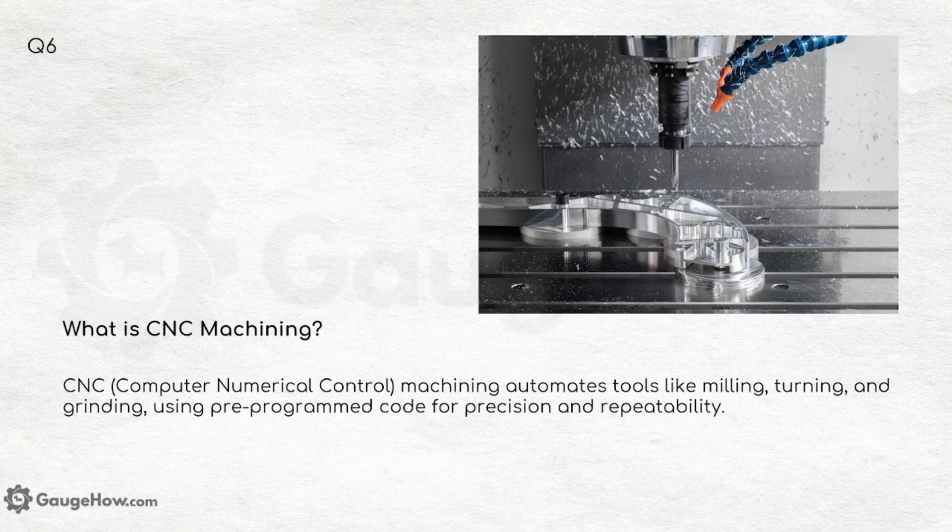What is CNC machining? CNC — Computer Numerical Control — machining automates tools like milling, turning and grinding using pre-programmed code for precision and repeatability.